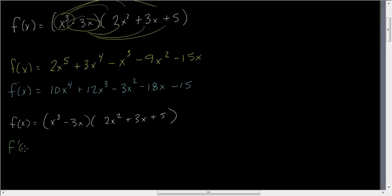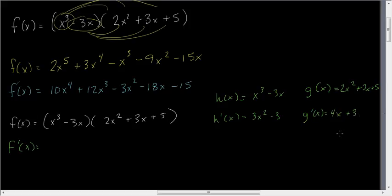And see if our product rule comes out with the same thing. f prime of x, then, is equal to, and now we have to identify our four functions. And so I'm going to identify h of x is equal to x cubed minus 3x, which means its derivative is equal to 3x squared minus 3. g of x is going to be equal to 2x squared plus 3x plus 5.